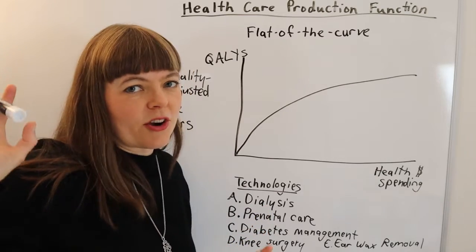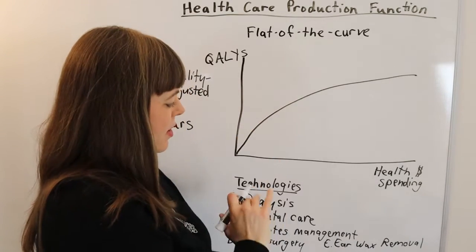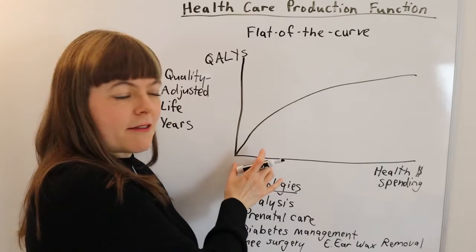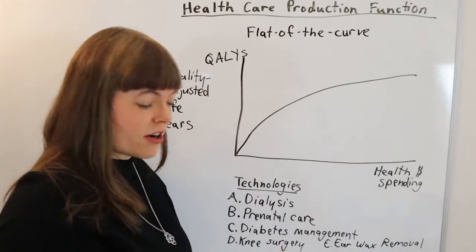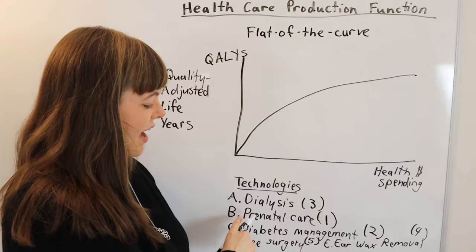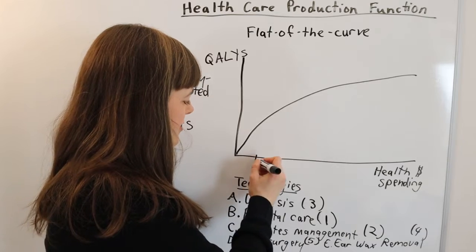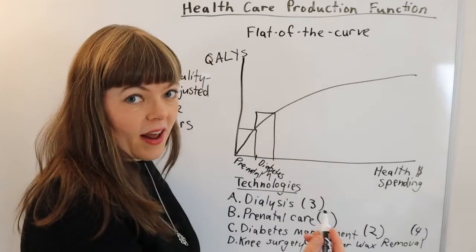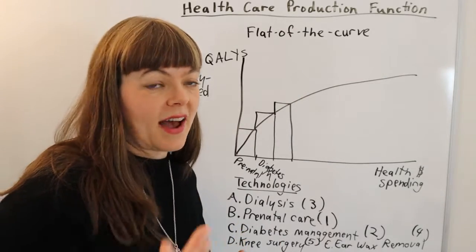Of course our list would be way longer than that, but I'm just trying to illustrate things. To come up with this shape we're going to rank these in order and put the most effective, the most valuable treatment first — ranking by quality adjusted life years per dollar added to the population's health. So prenatal care is the best way of improving health, so we put that first; second is diabetes management; and third is dialysis. We're lining things up in the order of how much they add to our health.